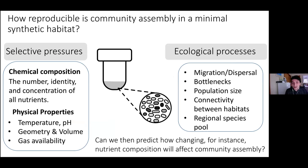What my lab does is study these questions in well-controlled habitats where we have detailed knowledge of chemical composition, physical properties, and nutrient composition. Because these are liquid communities, we can also do analytical work to understand how microbes affect the environment. We also have control over ecological processes — the history of colonization, where migrants come from, how connected habitats are. This gives us a tool to understand what rules give rise to emergent simplicity in microbial community assembly at both taxonomic and functional levels.